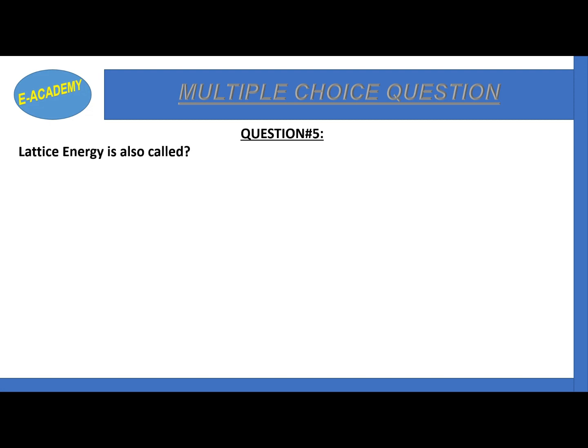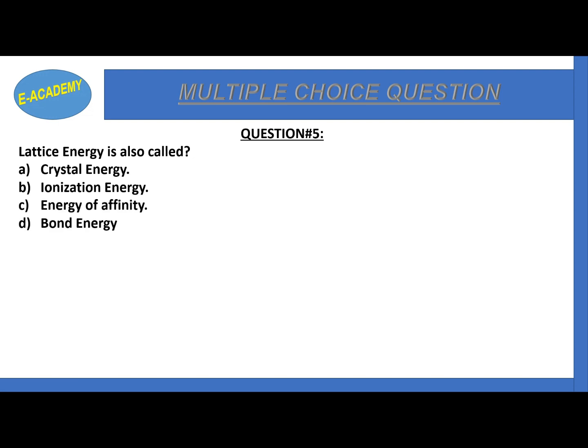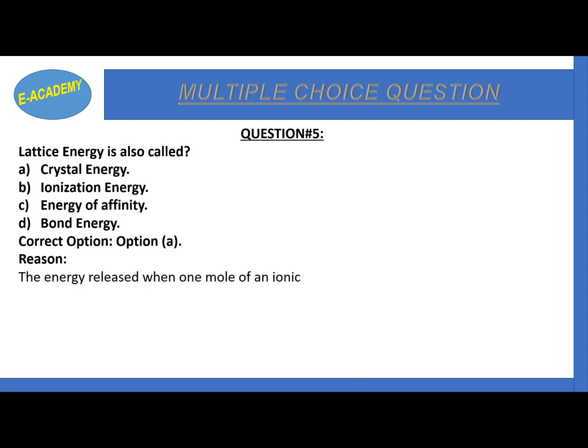Question number 5: Lattice energy is also called crystal energy, ionization energy, energy of affinity, or bond energy? The correct option is A: crystal energy. The energy released when one mole of ionic crystal is formed from gaseous ions is called lattice energy.